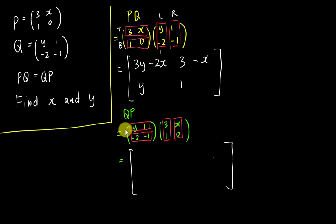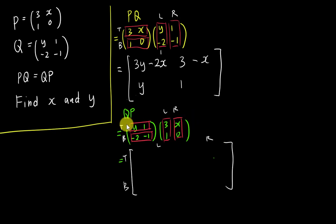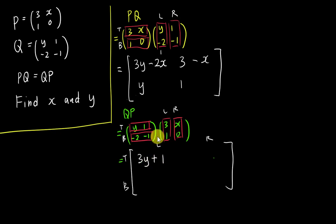For the top-left entry of QP: Y multiplied by three gives three Y, then one multiplied by one gives plus one. So the top-left entry is three Y plus one. For the top-right entry: Y multiplied by X gives XY, then one multiplied by zero gives zero, so the top-right entry is XY.